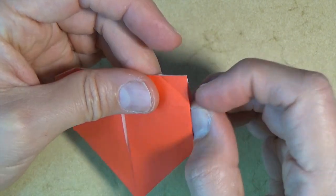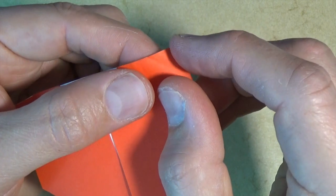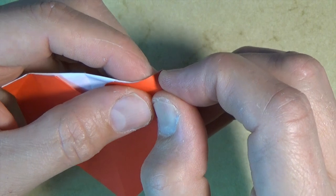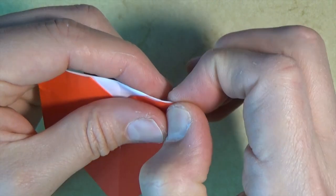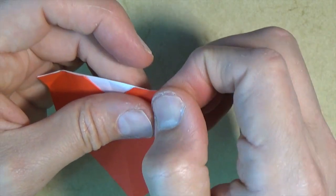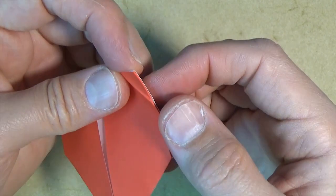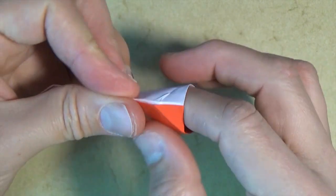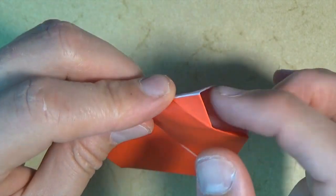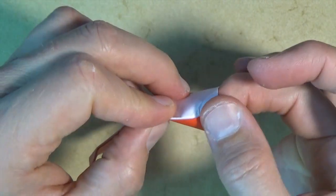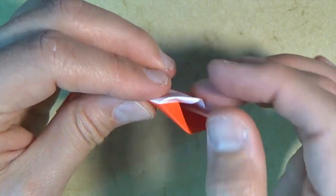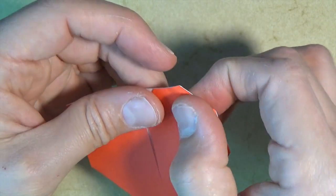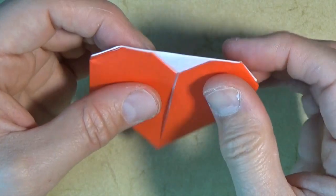If you want, you can first flatten it and fold it as a mountain fold. Okay, and unfold. Now, open up this side pocket. Put your finger in. And now just push this point inside, right on the existing creases. Like that.